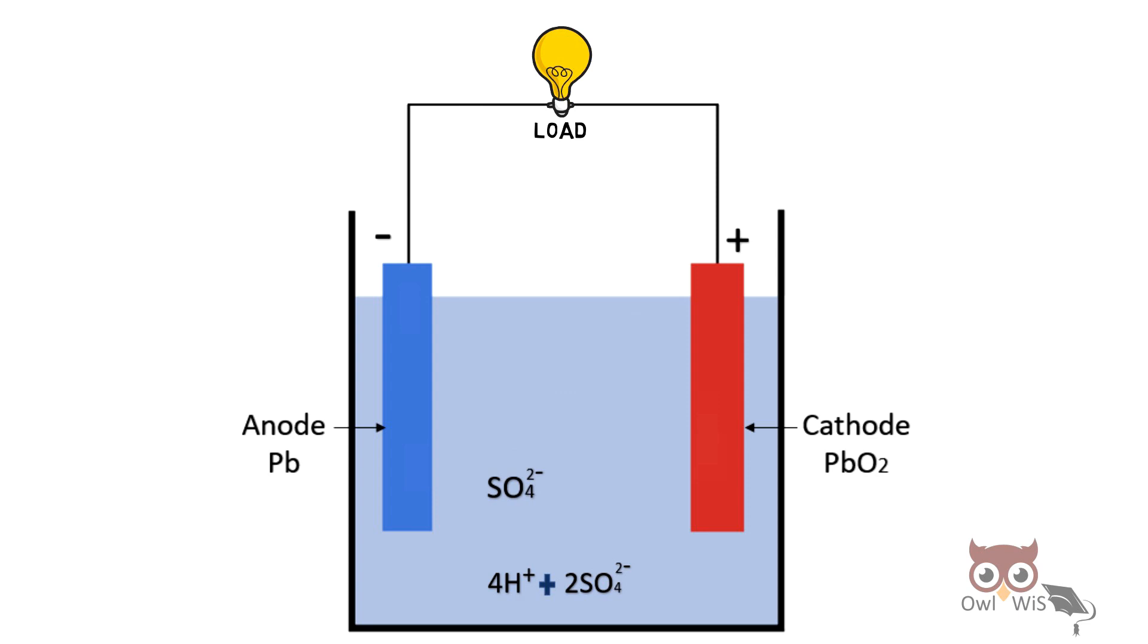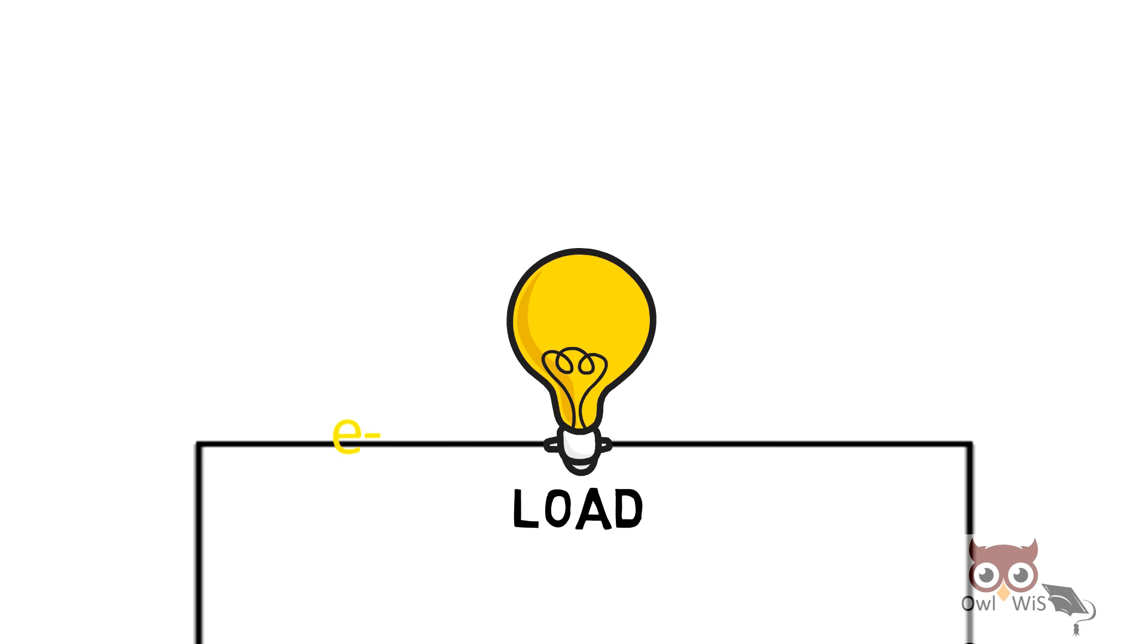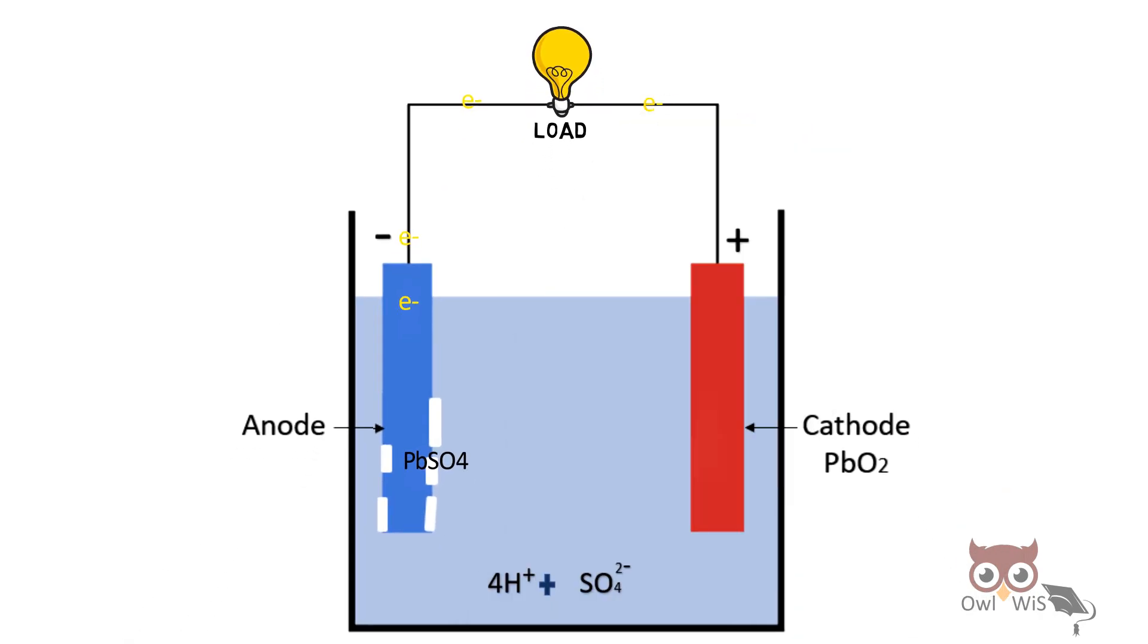One of the sulfate ions moves towards the anode, gives its electrons, and reacts with lead to form lead sulfate. The electrons then travel through the external circuit, light up the load, and reach the cathode.